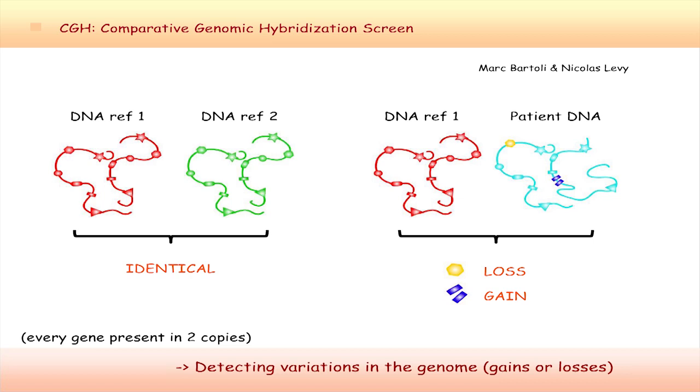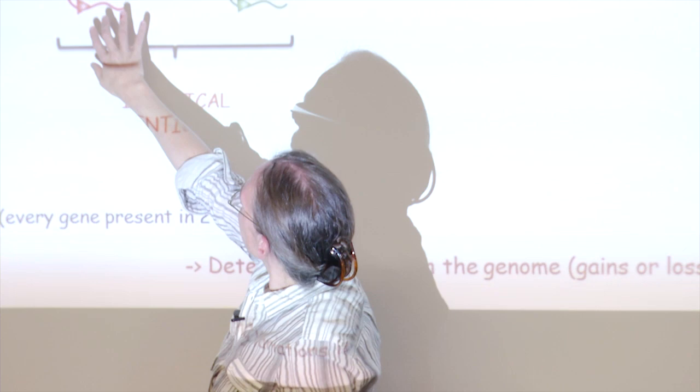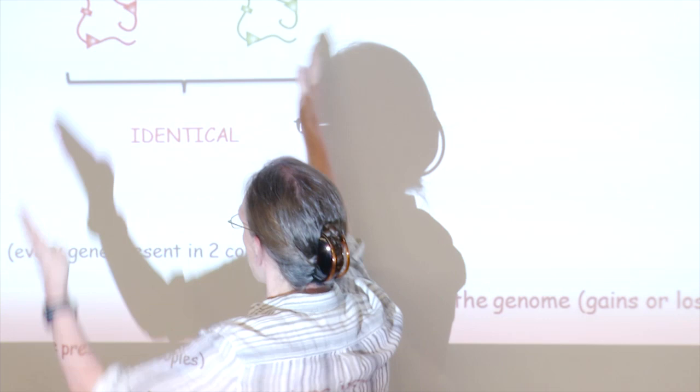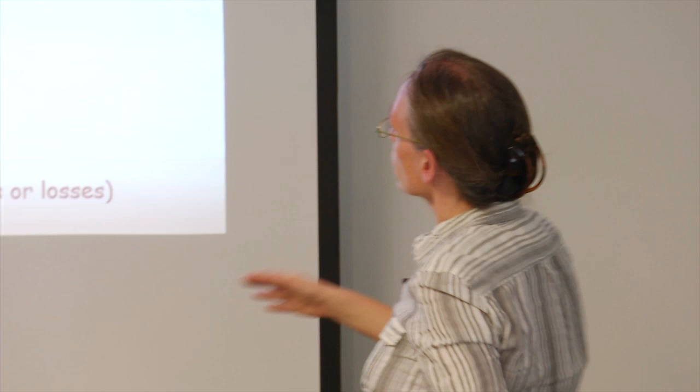Basically, the principle is to compare two DNAs. What I tried to show is that, let's imagine we are comparing the same DNA. We label it on one side in red and on the other side in green. But if you compare the two by measuring how much of every little fragment is present, you will detect that it's identical. So if now we compare reference DNA from a healthy individual to DNA from a patient, you will be able to detect whether everything is identical or whether there are any changes.